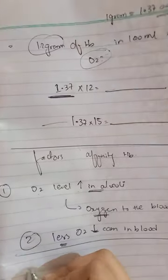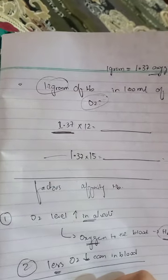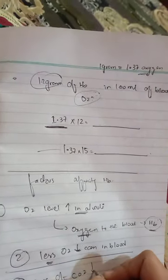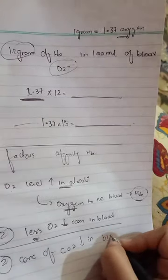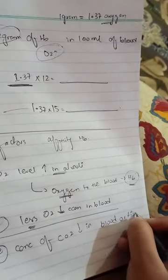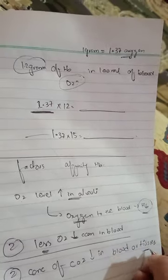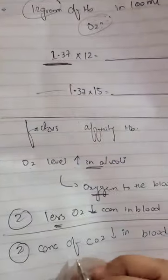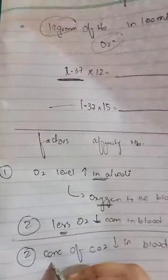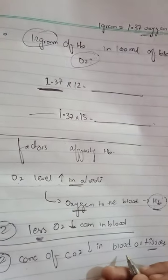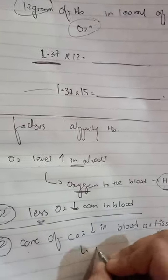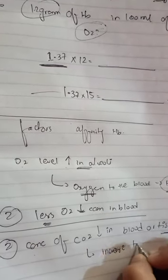A second condition: if the concentration of carbon dioxide is less in blood or tissues, it will increase the affinity of hemoglobin for oxygen. So if there is less concentration of carbon dioxide in blood or tissues, the affinity of hemoglobin to bind with oxygen is increased.